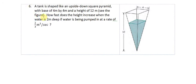All right, so let's look at another example. This time things get a little bit more fun. A tank is shaped like an upside-down square pyramid and the base is 4 by 4, so this length here is also 4. The height of it is 12.